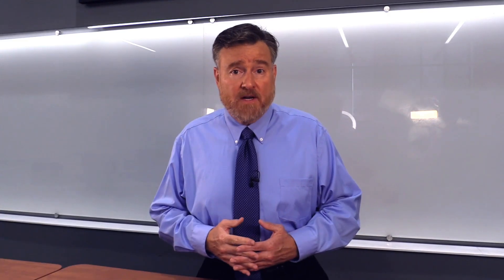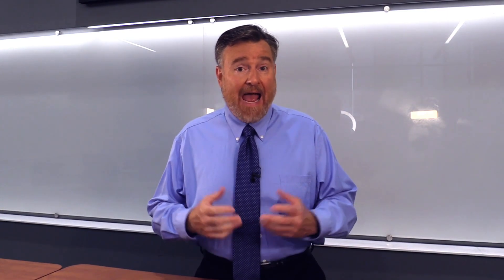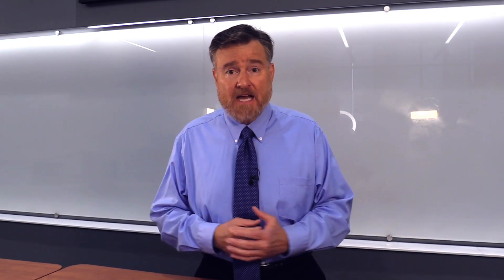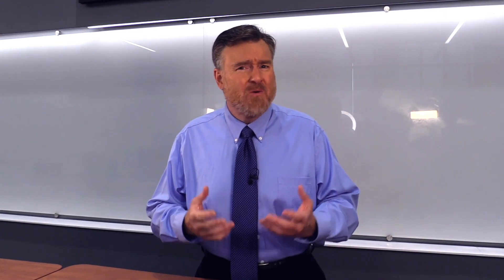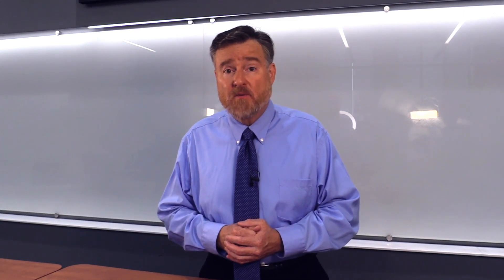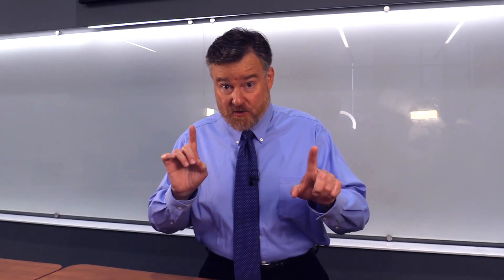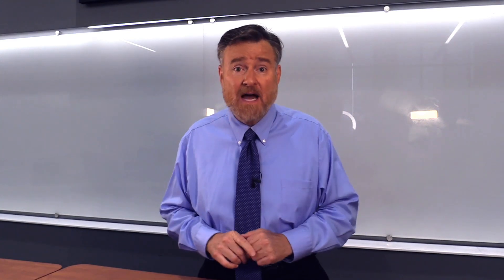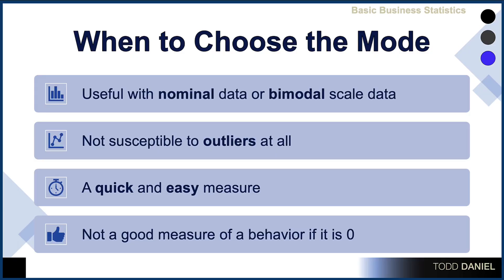Returning to our example about fishing, the average best time to go fishing is at noon. If we see the bimodal distribution, however, we know that there are two best times and they're definitely not at noon. Another time to choose the mode is when we have outliers in the data set, because the mode is not susceptible to outliers at all.